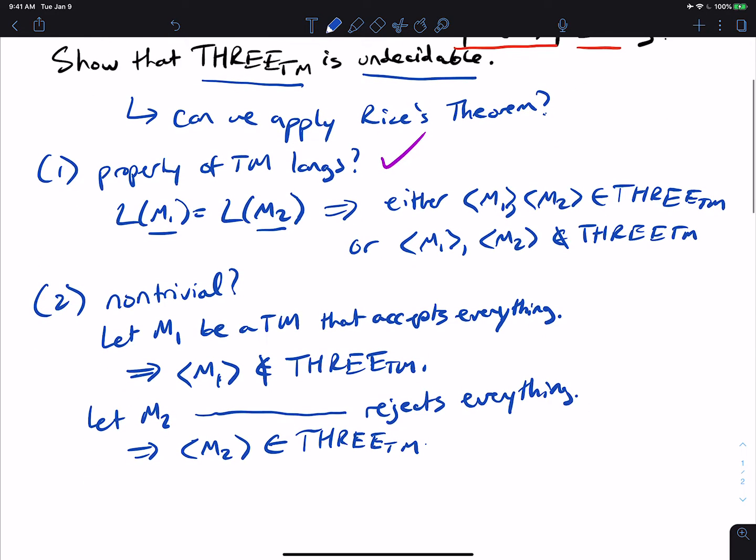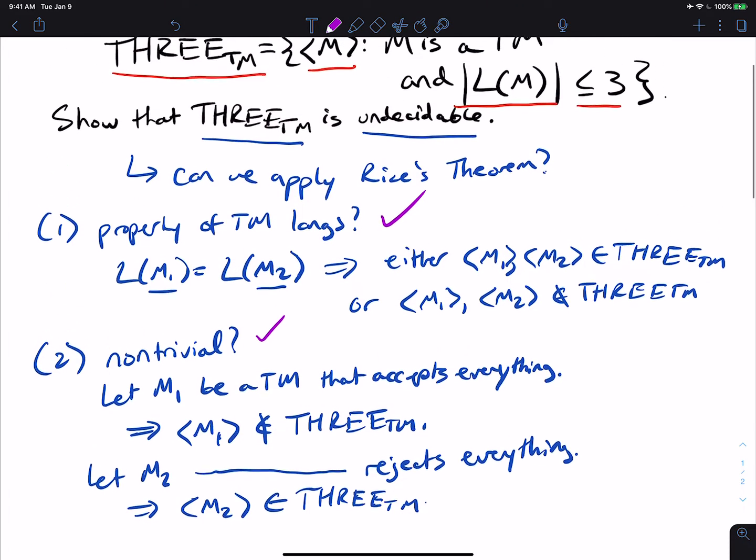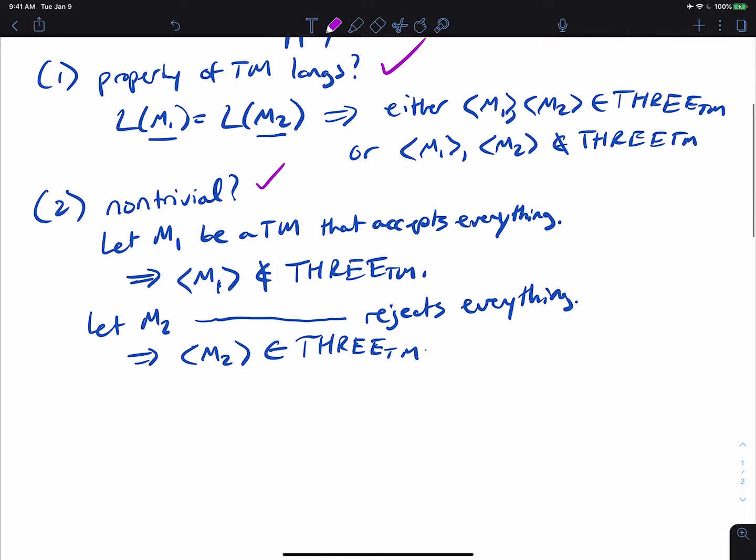So we can conclude from this that this property is non-trivial. So the most important part right here, by Rice's theorem, it's a non-trivial property of Turing machine languages, which means that 3TM is, in fact, undecidable.